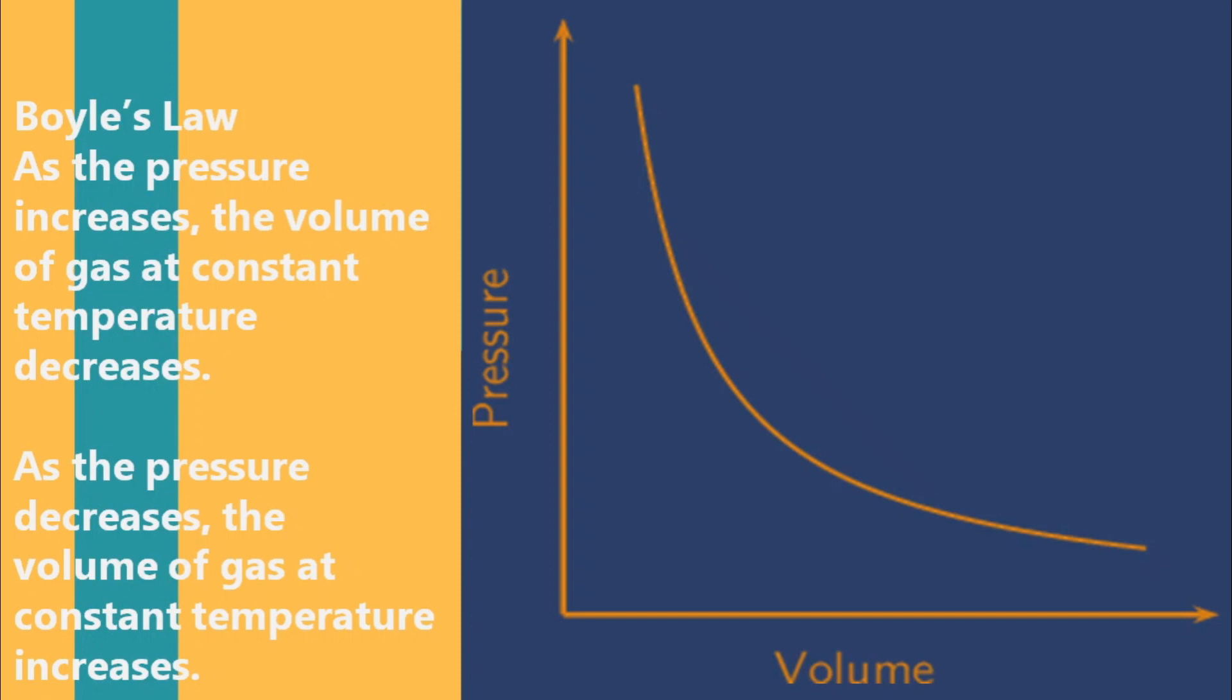Now this is a volume pressure curve plotted from the results of Boyle's expression. This shows the relationship between the pressure and the volume using numerical data. In Boyle's experiment, it only shows that as the volume decreases, the pressure increases, which pertains to an inverse relationship.